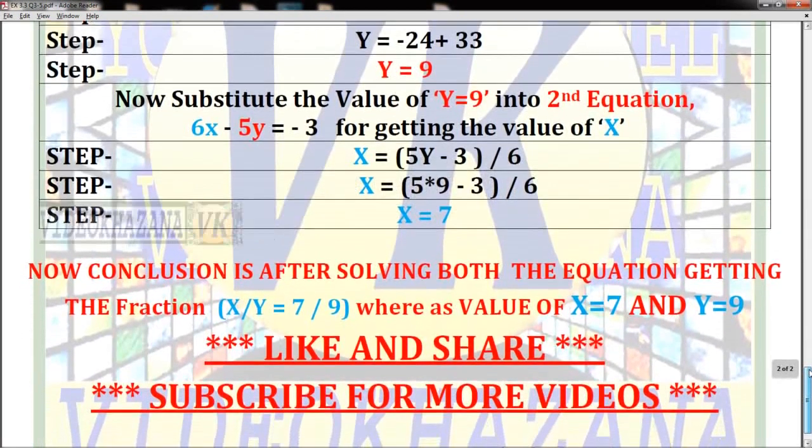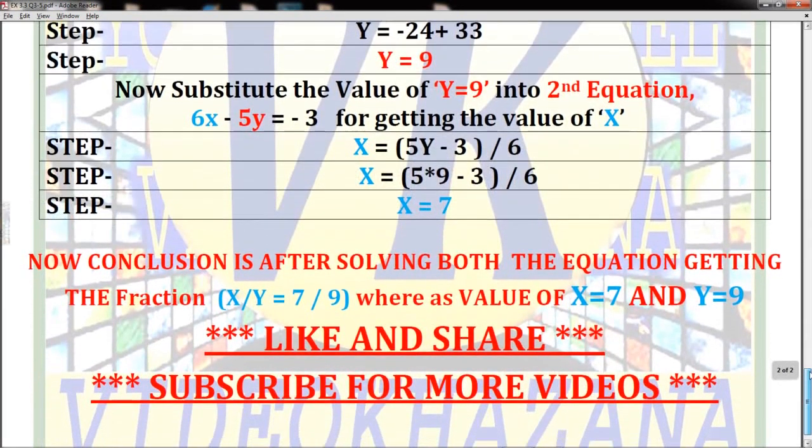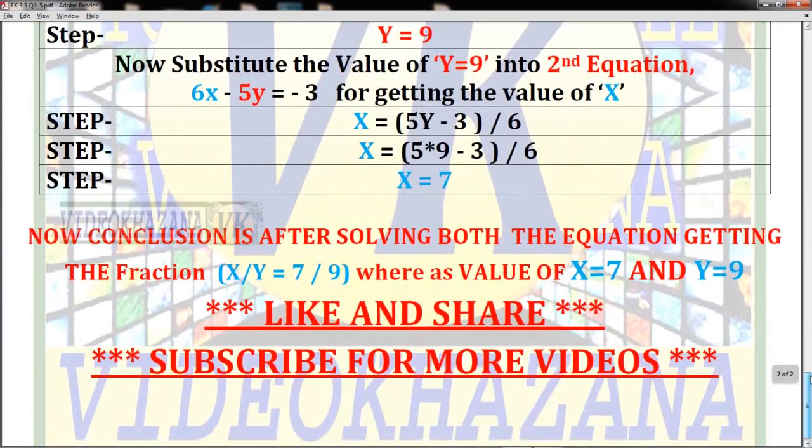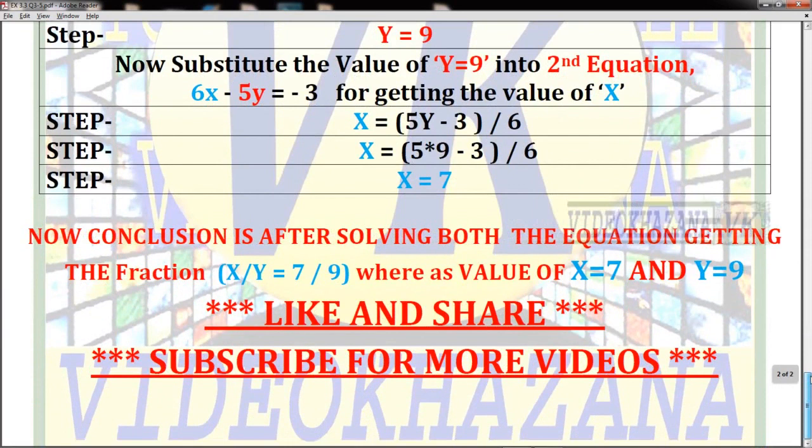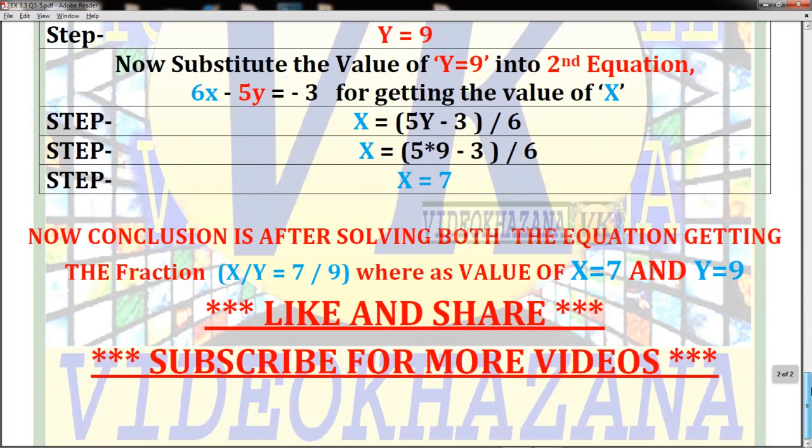You calculate the value by putting y in the respective places, and you will get x = 7. The conclusion is: after solving both equations, we get the fraction x/y = 7/9, where x = 7 and y = 9.